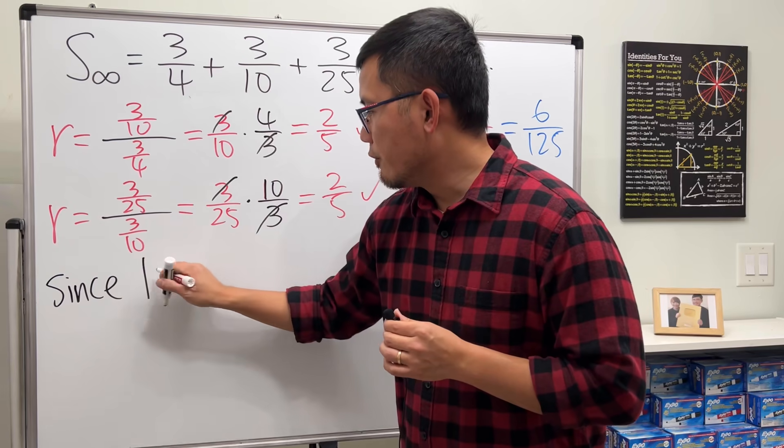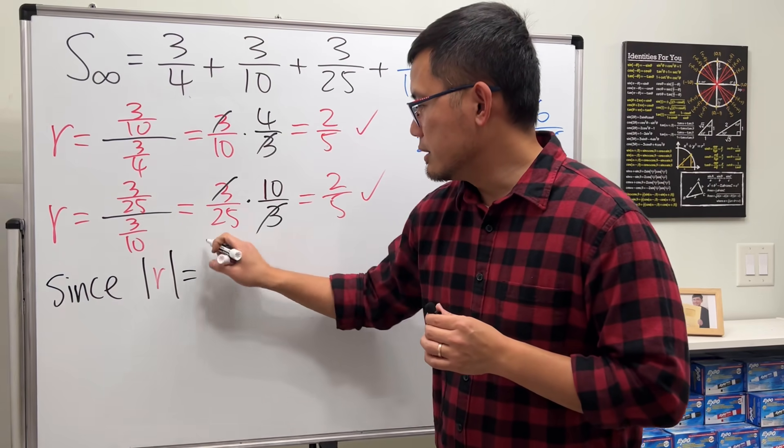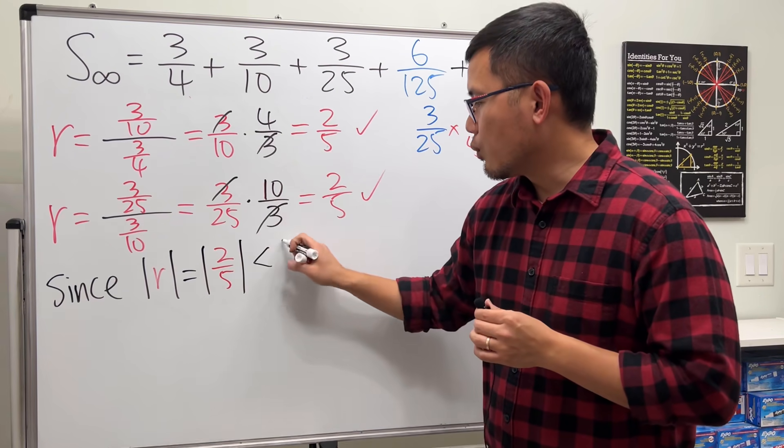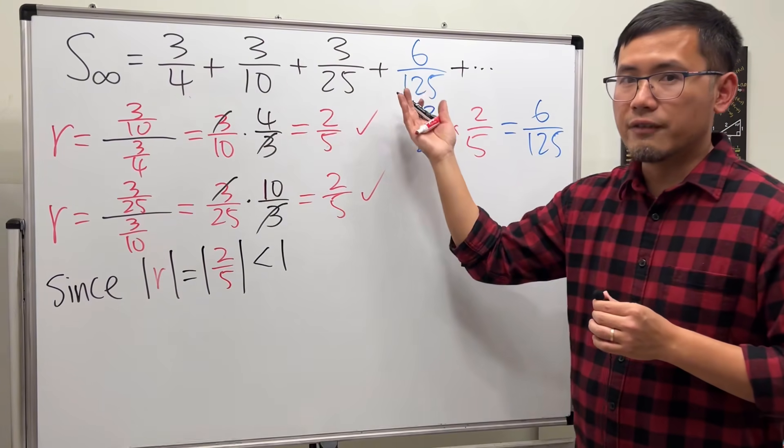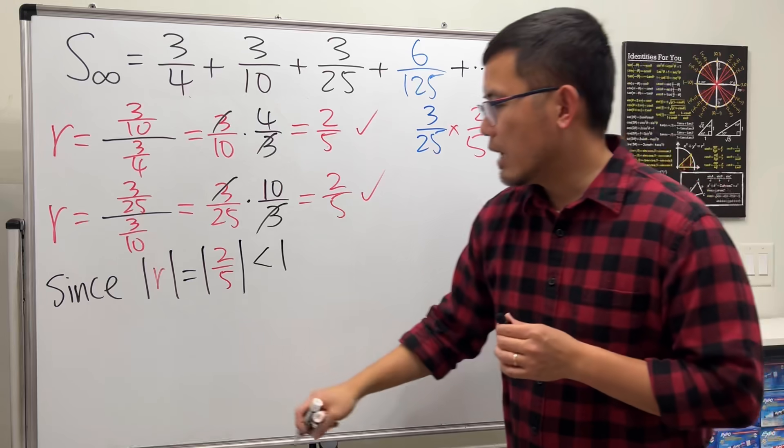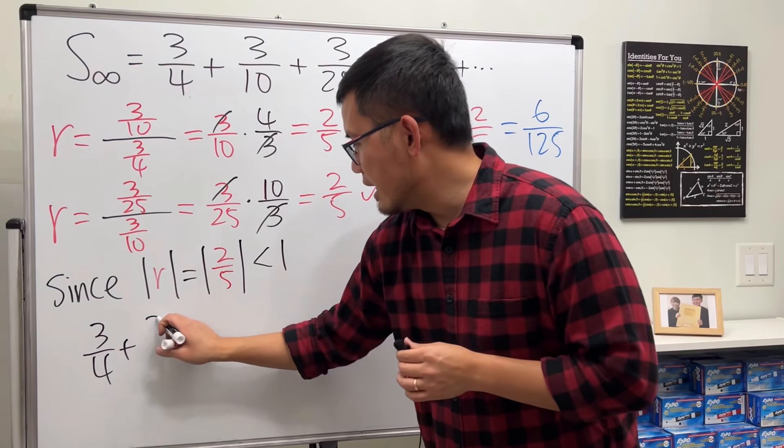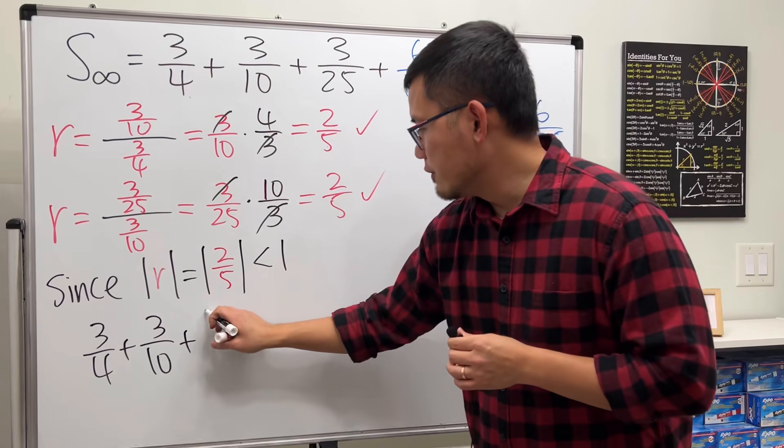So I just say since the absolute value of r, which is the absolute value of 2 over 5, that is less than 1, so this thing converges and we can figure this out. I'll just write this down: 3 over 4 plus 3 over 10 plus 3 over 25 plus dot dot dot.